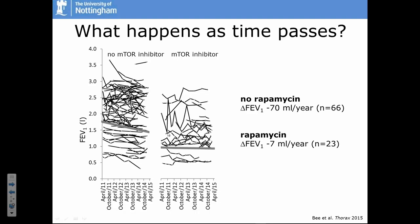Patients treated with rapamycin to stabilize their disease show an average loss of only about seven millilitres per year. We think rapamycin will reduce the loss of lung function in these patients. As time passes, if lung function is stable, we don't do anything. If it's falling, then we have a treatment to offer.